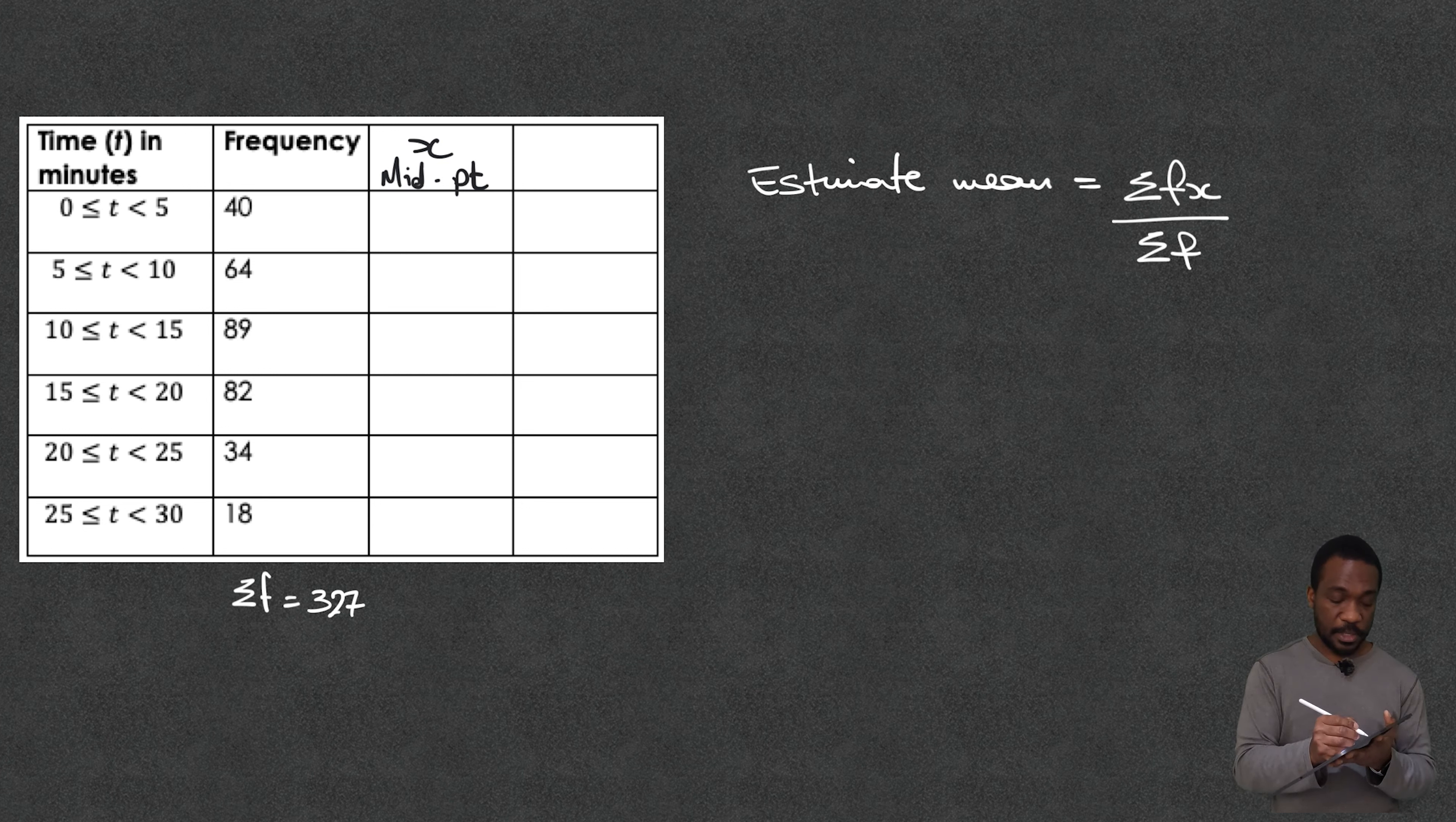The middle of 0 and 5 is 2.5. The middle of 5 and 10 is 7.5. The middle of 10 and 15 is going to be 12.5. We got 17.5 here, 22.5 there and 27.5 here.